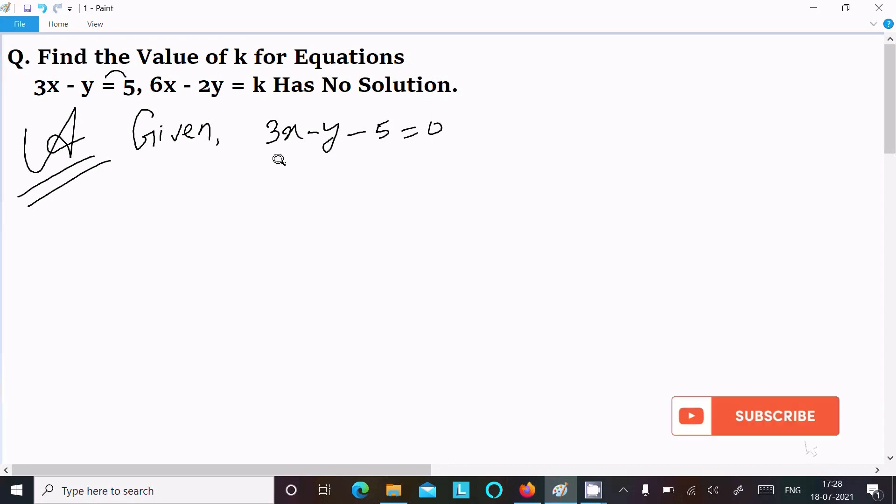This equation is in the form a1x plus b1y plus c1 equal to 0. Now you can easily identify the a1, b1, c1 values. So a1 equals 3, b1 equals minus 1, and c1 equals minus 5.